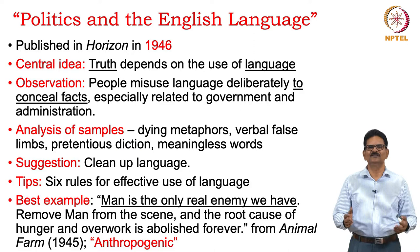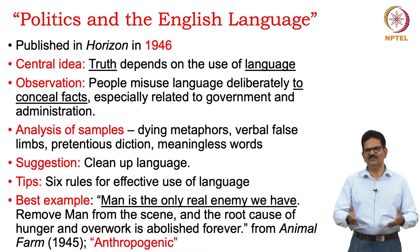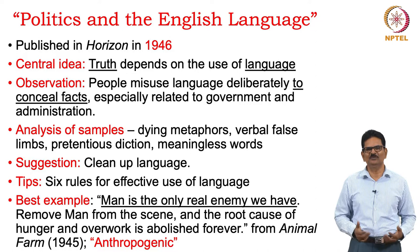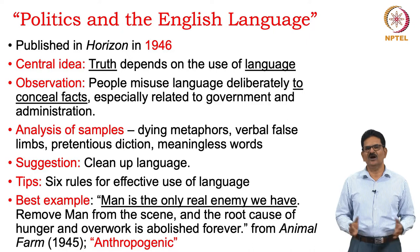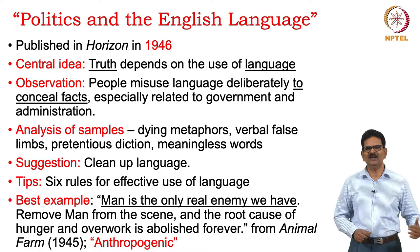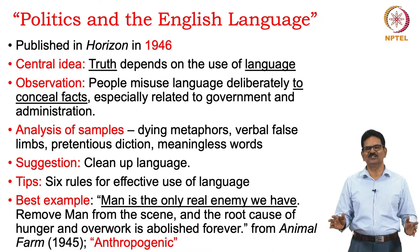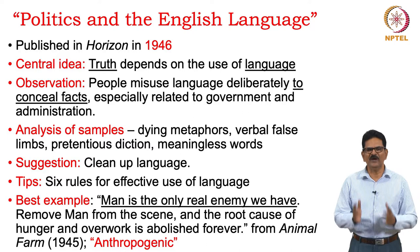We have a beautiful example from Animal Farm. Orwell says: 'Man is the only real enemy we have.' Everyone can understand this sentence and would be disturbed by it — and now we understand it through the anthropogenic concept today, that environmental problems issue from man's activities. He suggests: remove man from the scene and the root cause of hunger and overwork is abolished forever. Truth is truth and it is disturbing. We have created so many problems for the earth and for ourselves.